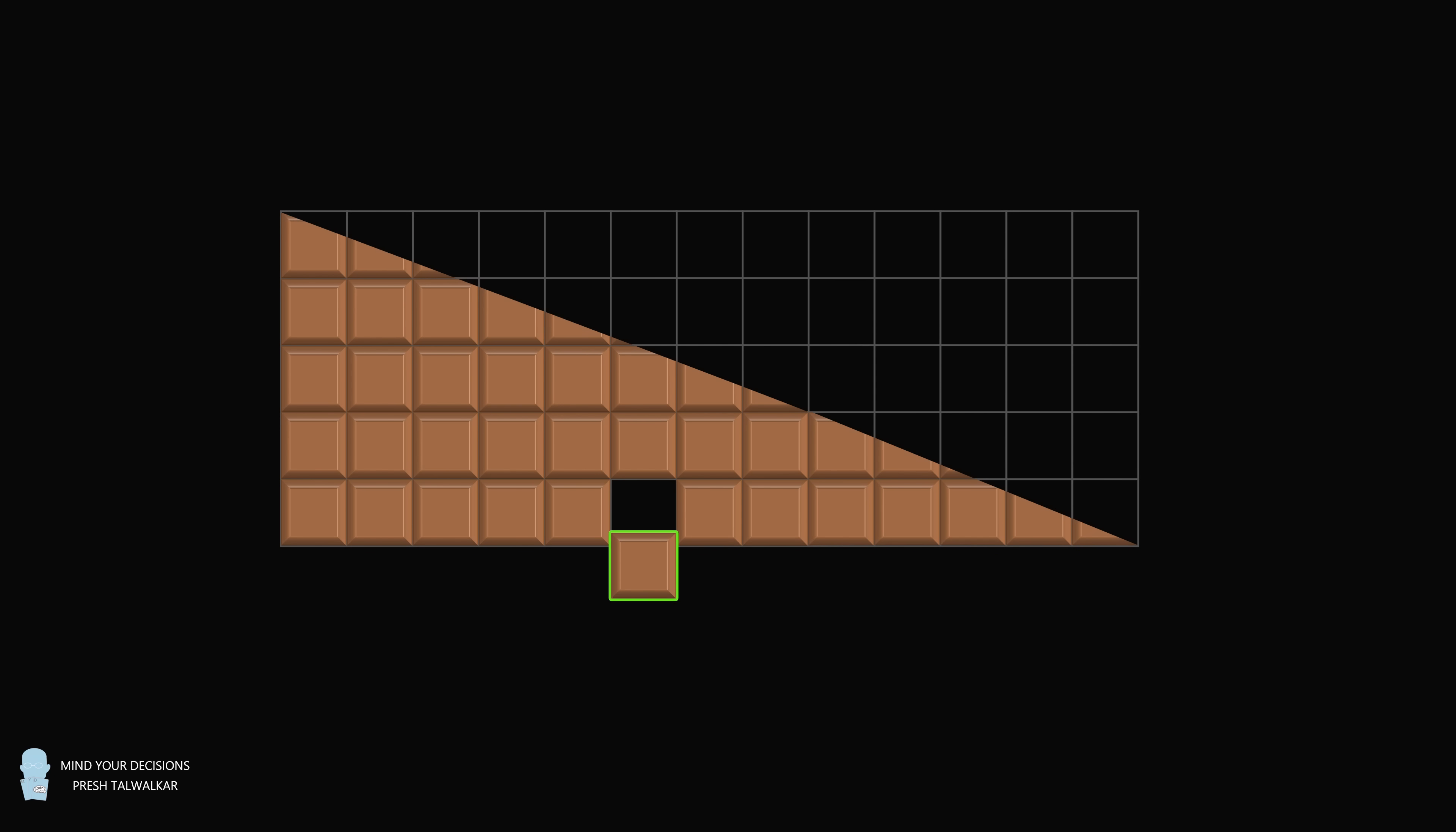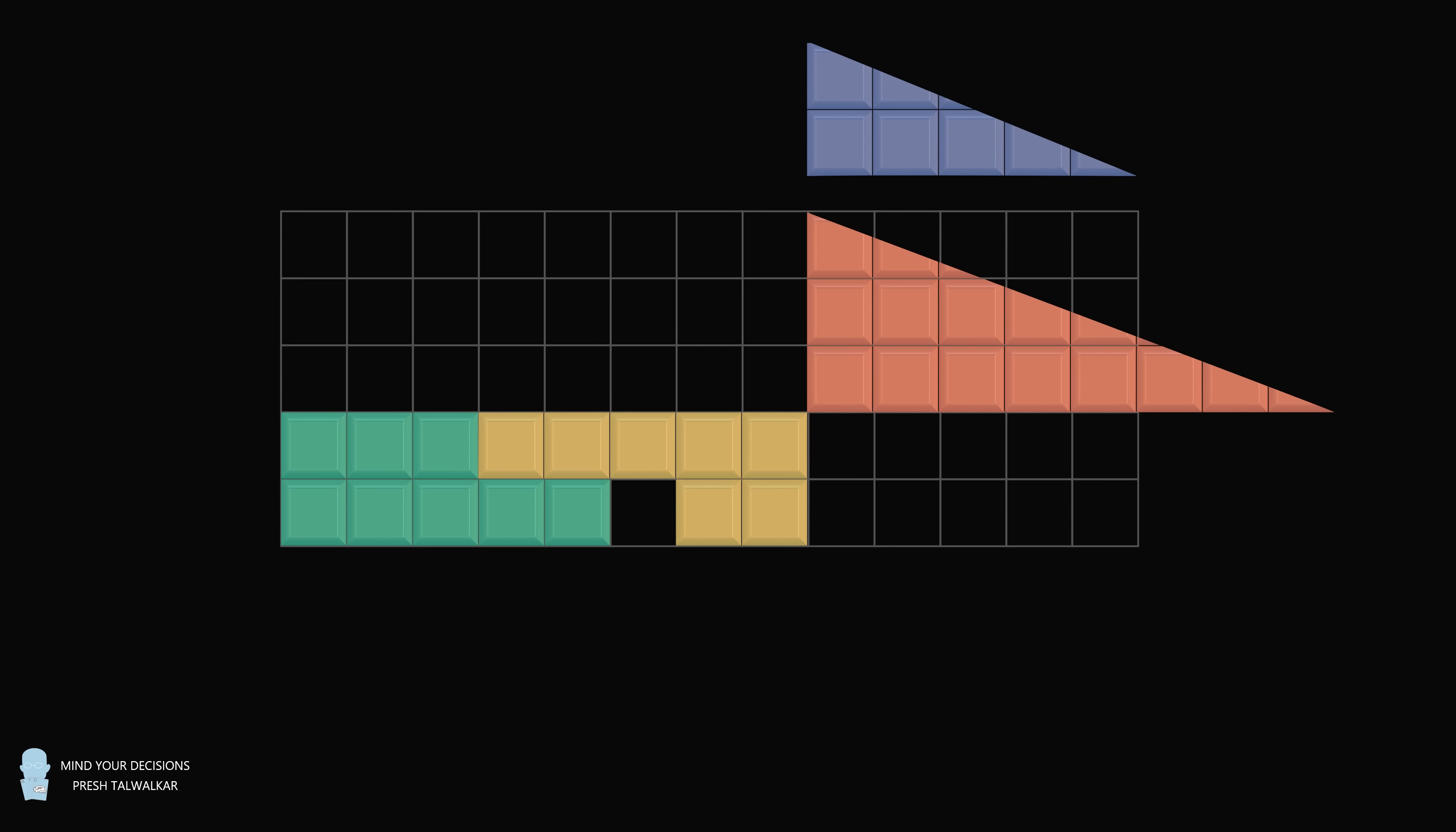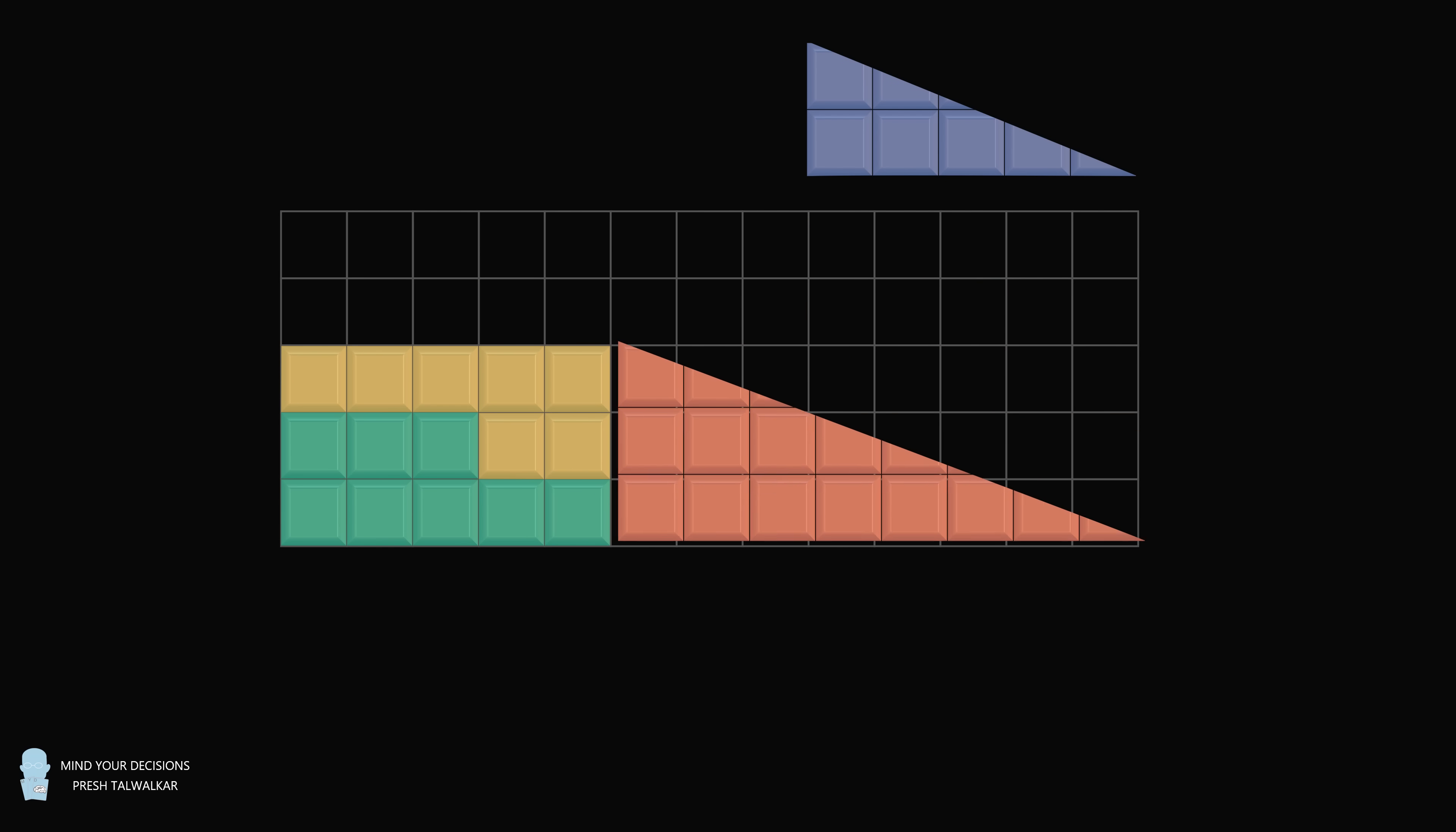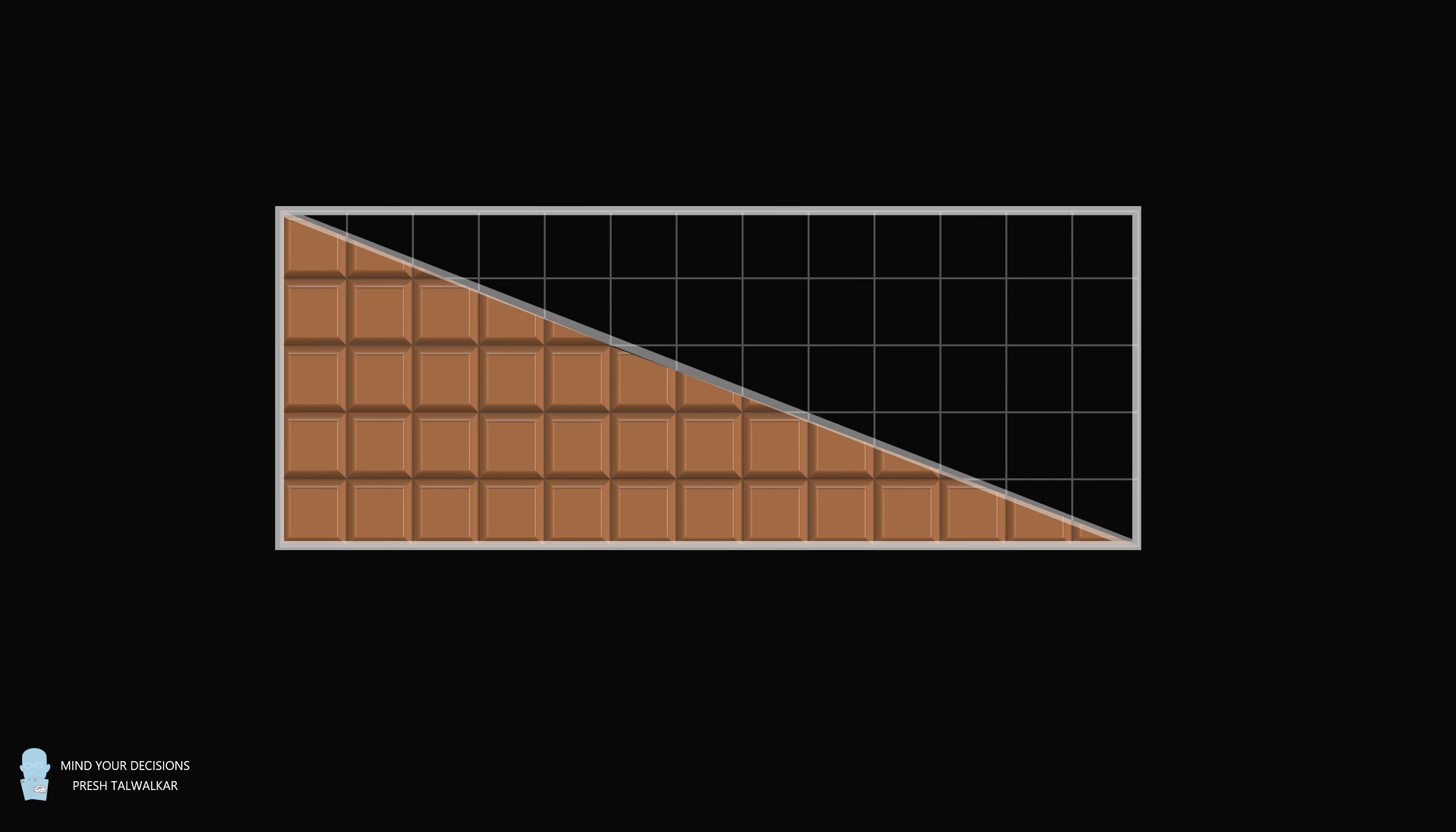This is truly one of the greatest mathematical illusions I've ever seen. How is it possible to remove a piece of chocolate and still end up with the same original area? It doesn't seem possible, so what is going on? So in order to understand this, let's solve a related question.